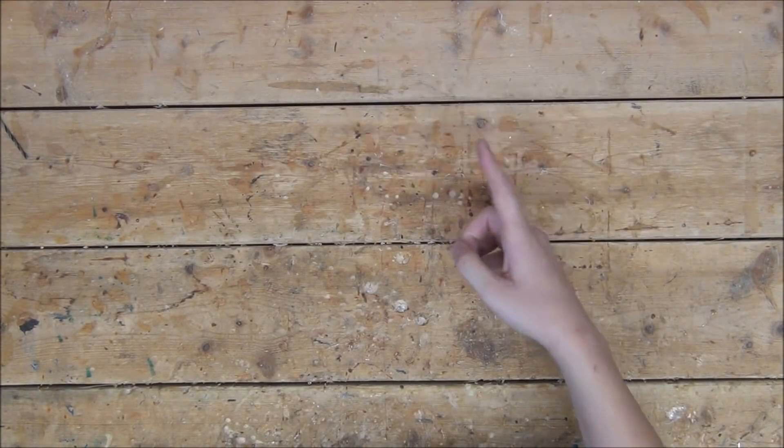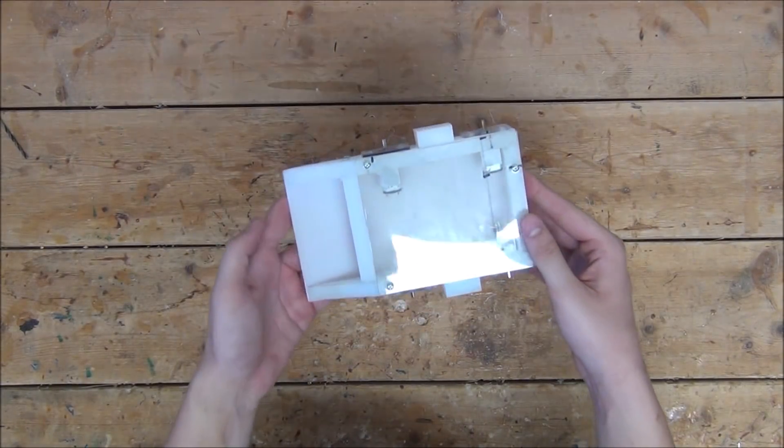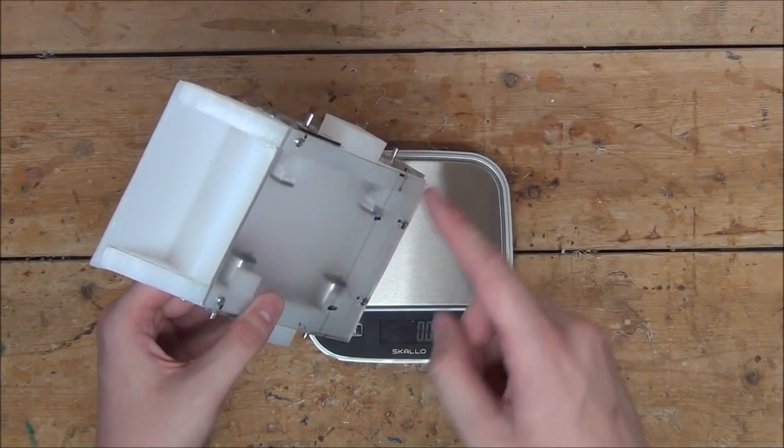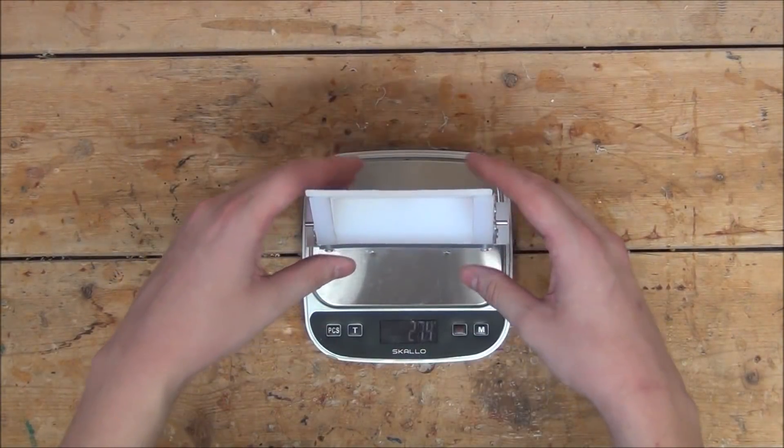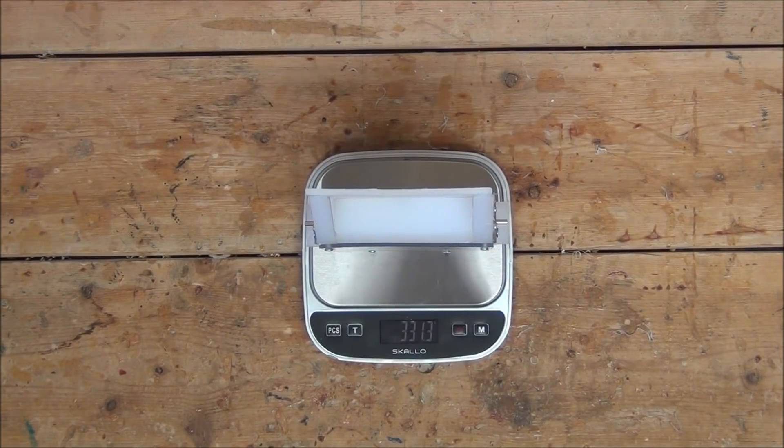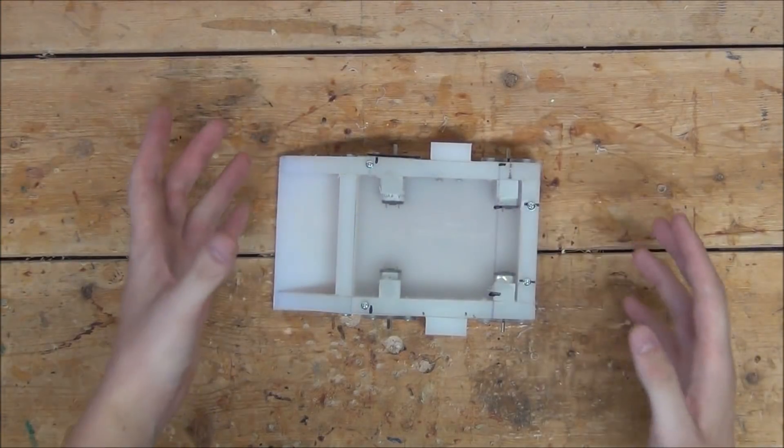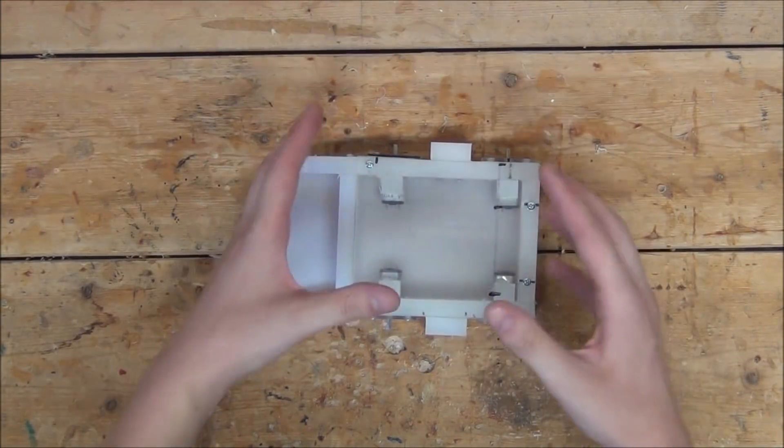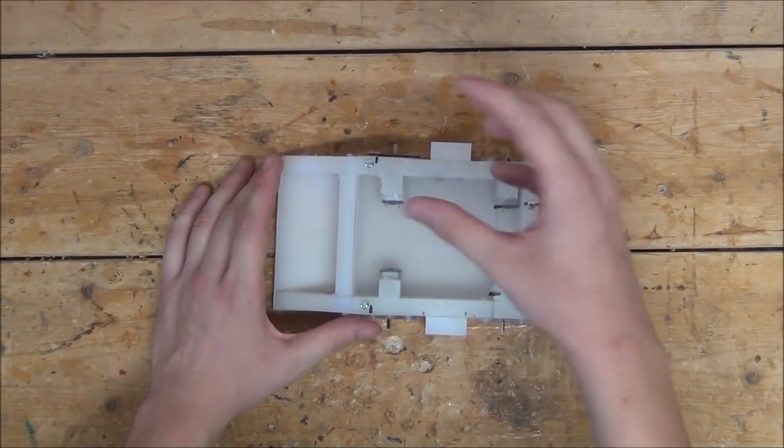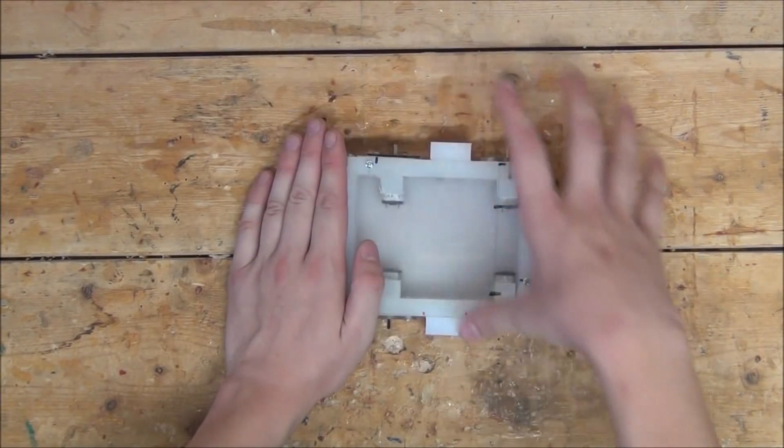How much does this thing actually weigh? Well, right now, with the drive motors in it, it weighs in at 331 grams, which is really good because a pound is 453. So that means that after we put in the rest of the electronics, hopefully we'll be left with about two pounds to build the arm, the front wedge, and the rest of the armor.